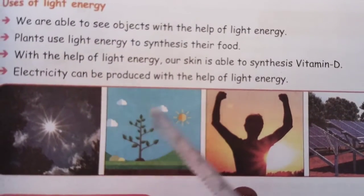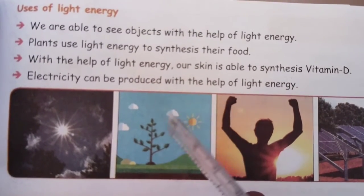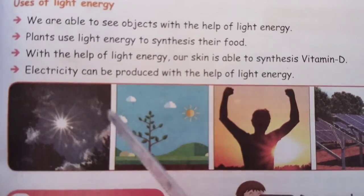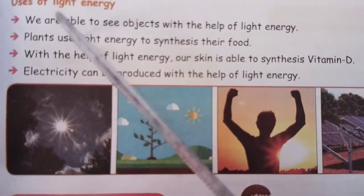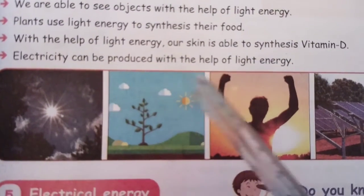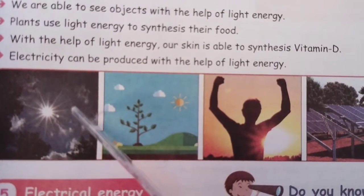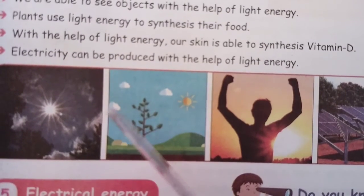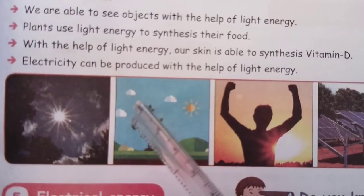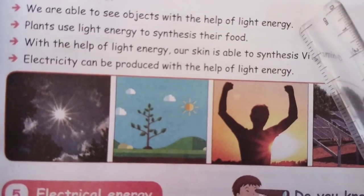Students, during daytime we get light naturally from sunlight. During the nighttime, we get light from the moon naturally. Apart from this, electric bulbs and electric lamps are artificial light sources. So we are able to see objects with the help of light energy. The sun and moon are natural sources of light, and electric lamp and bulb are artificial sources of light. All these light sources are used to see objects. Without light, we couldn't see anything. We see all kinds of objects with the help of light energy.